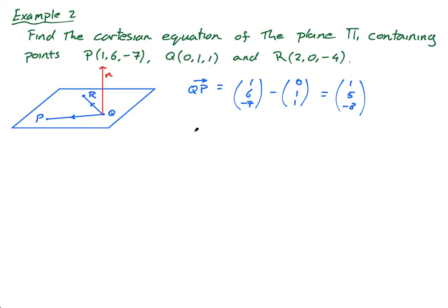And then I need Q, R, Q, R equals R minus Q, 2, 0, negative 4, minus Q, same thing, 0, 1, 1, equals 2, negative 1, and negative 5.